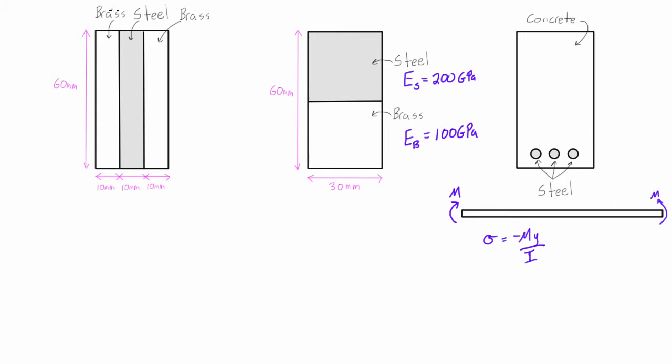So that would be in the case of this brass and steel, or this brass and steel, or even in reinforced concrete where we have rebar running down the length of the member and this part of the cross-section has a different modulus of elasticity. So what we need to do is we need to virtually transform one of these sections.